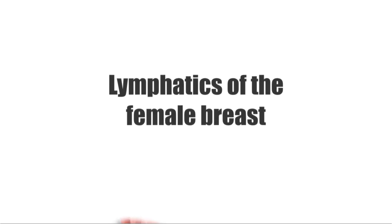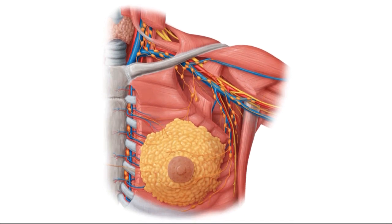In today's tutorial, we're going to look at some of the lymph nodes that drain lymph from the female breast and the surrounding areas. Here in this illustration, we can see an anterior view of the left breast. The majority of lymph nodes that drain the female breast are located in this region here, which is known as the axilla.